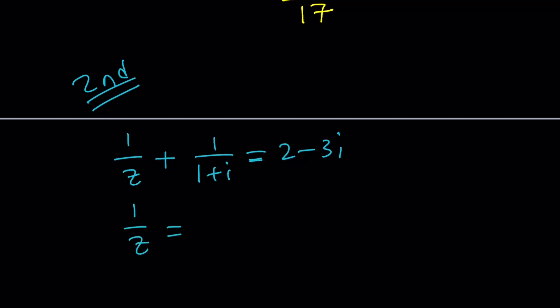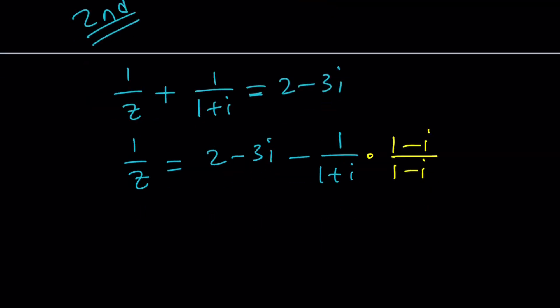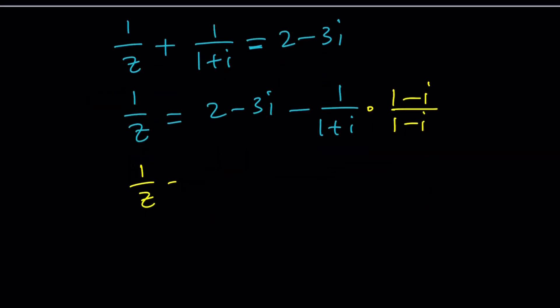Let's isolate 1 over Z. We're pretty much going to be doing the same thing here: multiply by conjugates. From here we get 1 over Z equals 1 minus I over 2, and make a common denominator. That's going to give us 4 minus 6I minus 1 plus I, again negation, divided by 2.